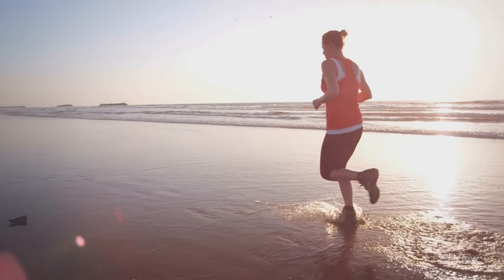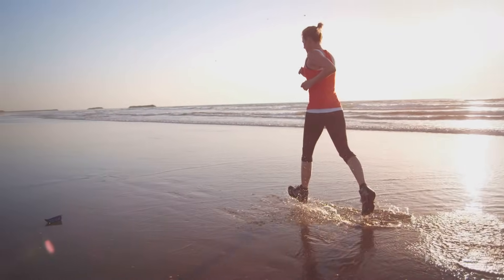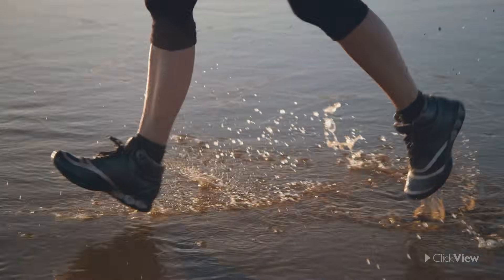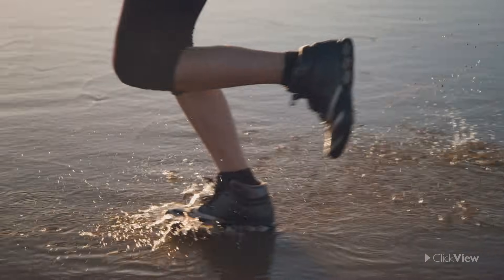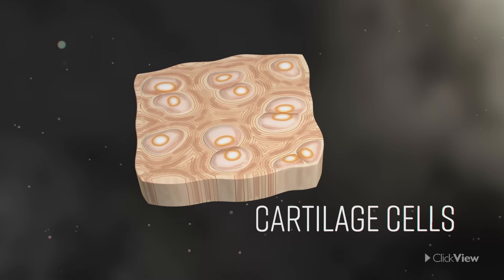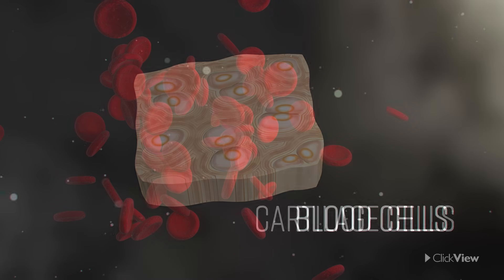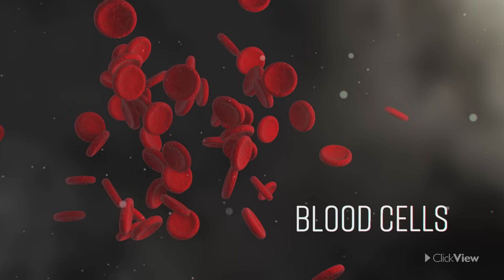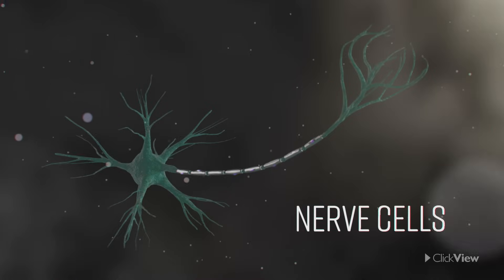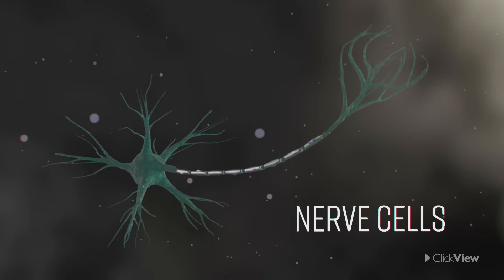All living things are made up of cells. There are many different types of cells in our bodies, including bone cells, cartilage cells, blood cells, muscle cells and nerve cells.